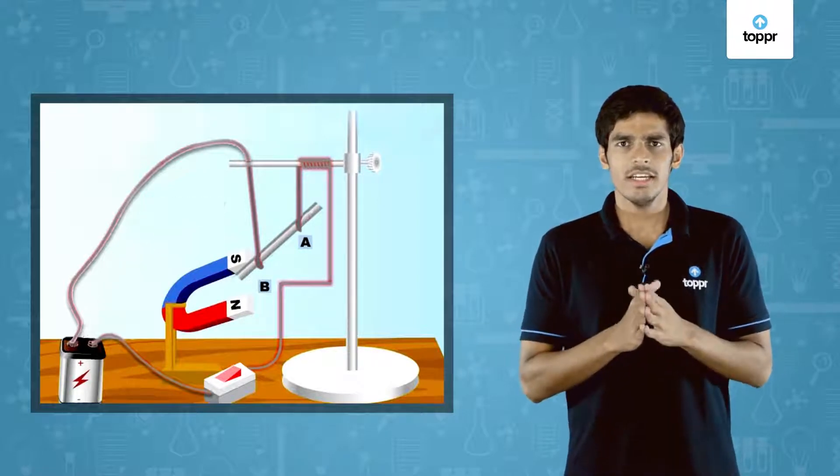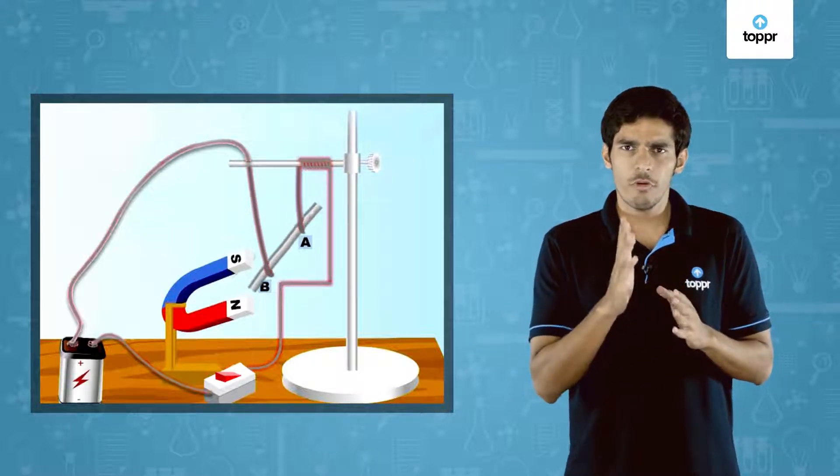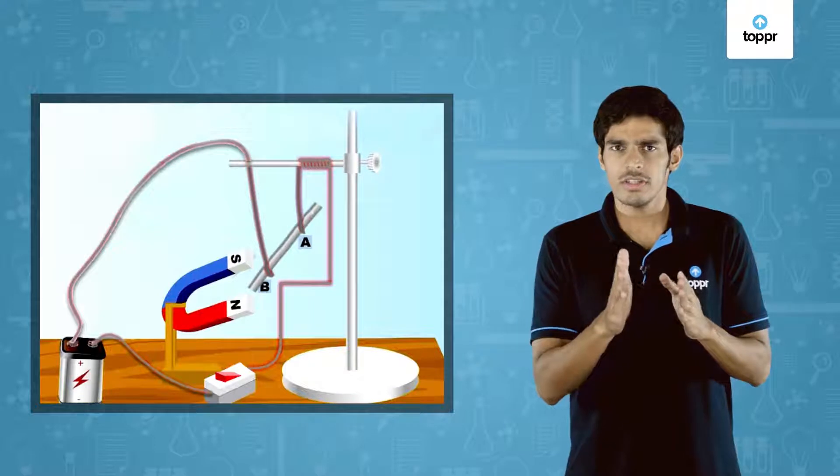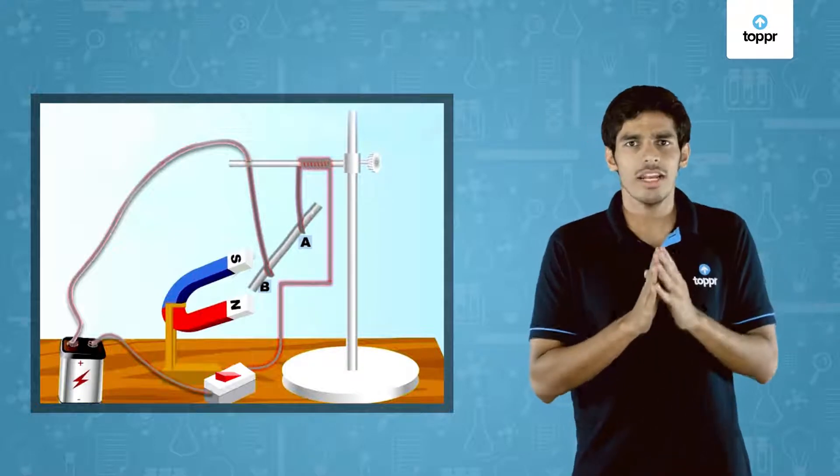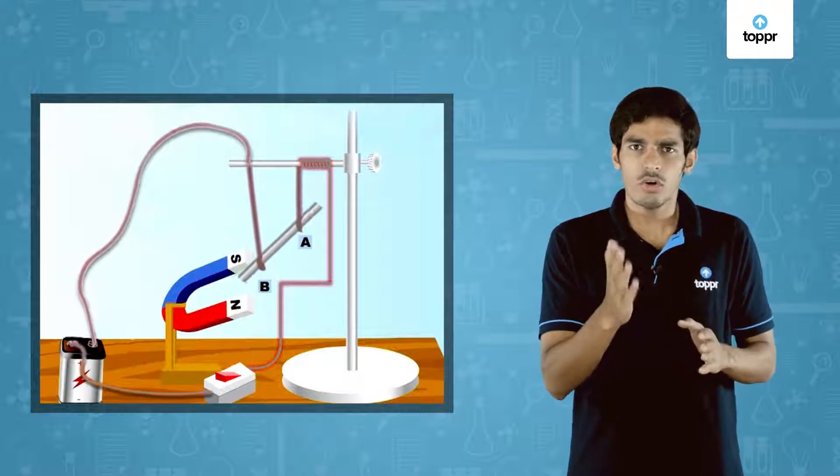Now plug the key and pass the current in the rod in the direction from A to B. What do we observe? We observe the rod has displaced to the left, and now if I reverse the direction of current, the rod shifts to the right.